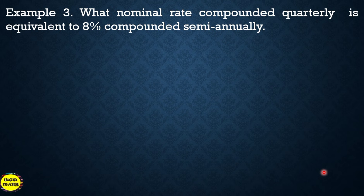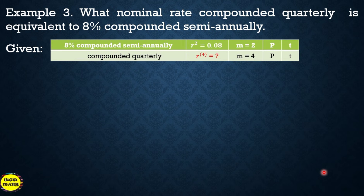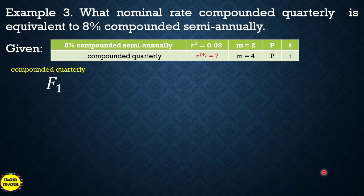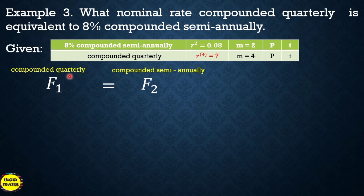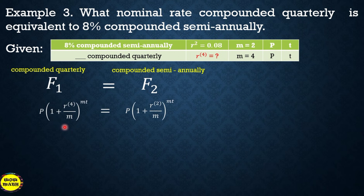Example number three: what nominal rate compounded quarterly is equivalent to 8% compounded semi-annually? Given: 8% compounded semi-annually, so the nominal rate is 0.08. We want the nominal rate compounded quarterly, which we place on the left side. Since both rates are compounded more than once a year, we use r raised to 4 for quarterly and r raised to 2 for semi-annually to distinguish them.